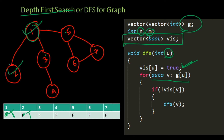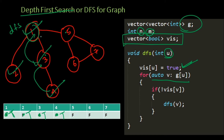Once we exit DFS(2), we go back to DFS(1) and look at the next neighbor, which is 3. Is 3 visited? No, so we do a DFS from 3. Node 3 is marked as visited, then we look at its children. There is an unvisited child of 3, which is 4, so 4 is also marked as visited. After visiting 4, there are no more children, so we recurse back to 3, and since 3 has no more children, we recurse back to 1.